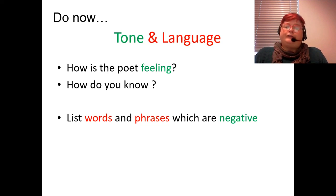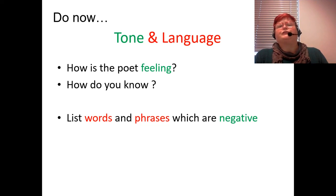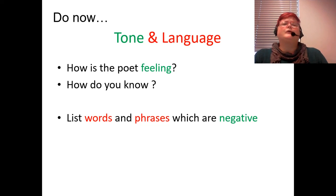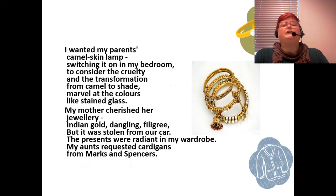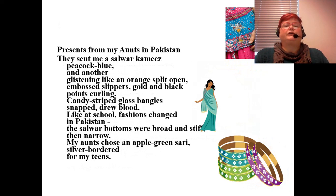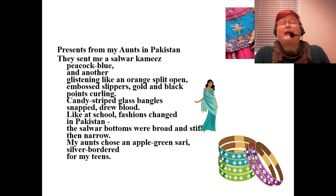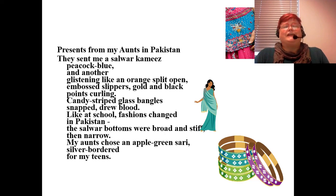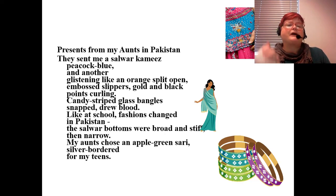Hopefully you will have written that she feels a bit confused — she's not sure if she should like English clothes or Pakistani clothes. We know that from some of the words she uses in the poem. The clothes from Pakistan are described using very positive words: they're glistening, they're embossed, they have candy-striped bangles and things like that. But at the same time they snap and they made her bleed.